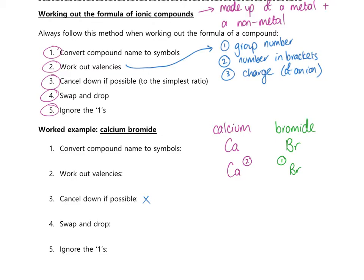Step four is swap and drop. What we mean is we're going to swap the valencies — so the valency of calcium goes to bromine and the bromine valency swaps across to calcium. The drop part means that instead of writing the numbers up at the top, we write them down at the bottom as subscripts, as we normally would in a formula. So we end up with Ca1Br2, written together with no space between the symbols because they are a compound.